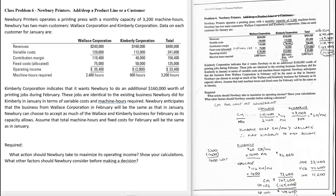In terms of the numbers, this looks like a good way to do it. We're making $33,400 now, and if we accepted this offer to double the Kimberly business, we would have operating income of $44,600.